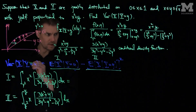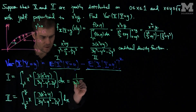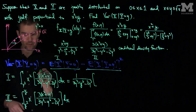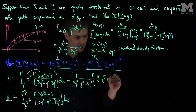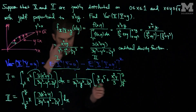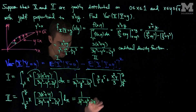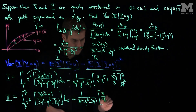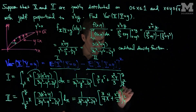Continuing to simplify term (1), I pull out the constant 1 over (3y squared minus y to the sixth minus 2y cubed). Integrating 3x to the fourth gives 3/5 x to the fifth, and integrating x squared y gives x cubed y over 3, evaluated from y squared to y. For term (2), I similarly pull out the pre-factor and integrate: 3x cubed gives 3/4 x to the fourth, and xy gives x squared y over 2, evaluated from y squared to y.